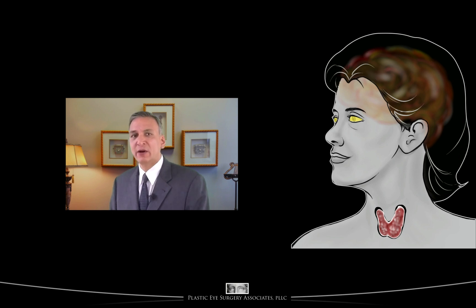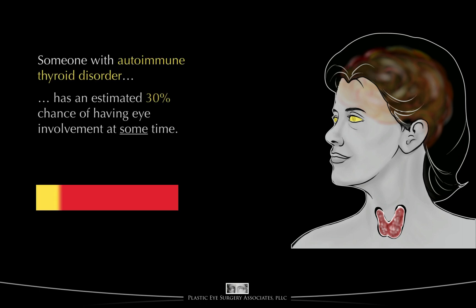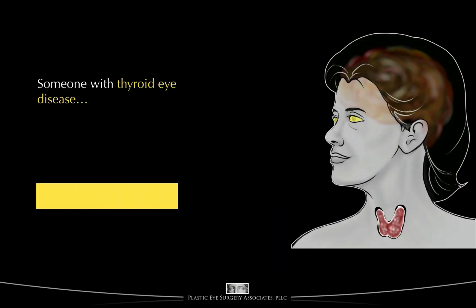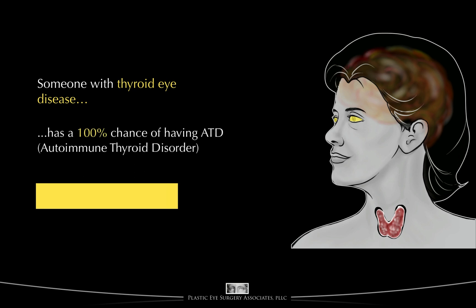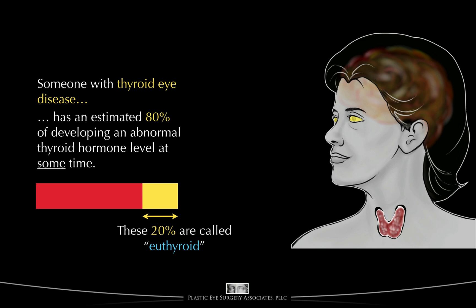Although we've said that thyroid disorders don't cause thyroid eye disease, there is clearly an association between the two. If this red bar represents all people with ATD or autoimmune thyroid disorder, someone with ATD has an estimated 30% chance of developing thyroid eye disease at some time in their life. Conversely, someone who has clinical evidence of thyroid eye disease, by definition, has a 100% chance of having ATD, but only an 80% chance of developing THA or measurable thyroid hormone abnormality at some time. That leaves 20% of people with clinically obvious TED who never show abnormal thyroid hormone blood levels. We say that these people have euthyroid thyroid eye disease — euthyroid means normal thyroid.